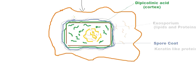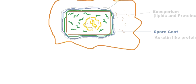After all the layers have been formed and the endospore is complete, the mother cell is going to eject it out. The mother cell disintegrates — it has done its work and is of no further use — releasing the mature endospore.